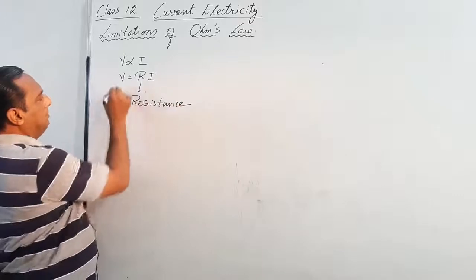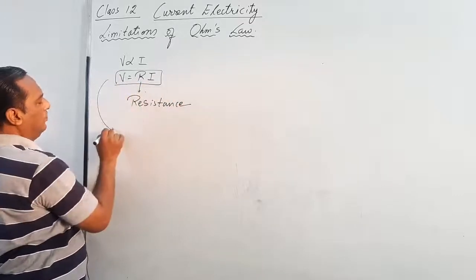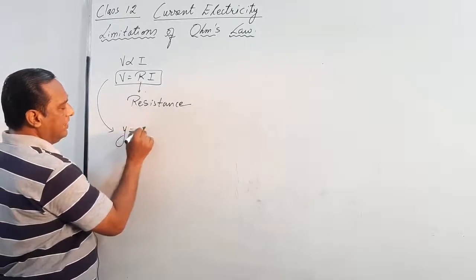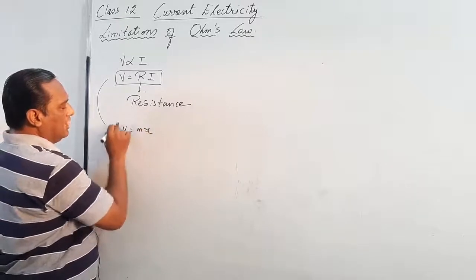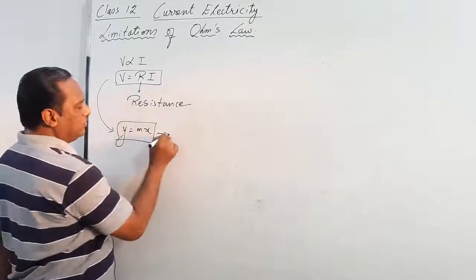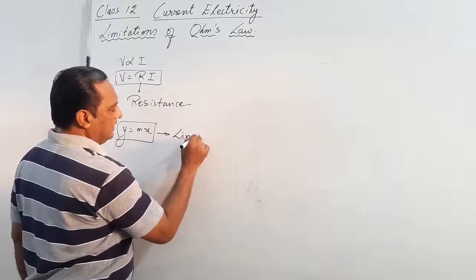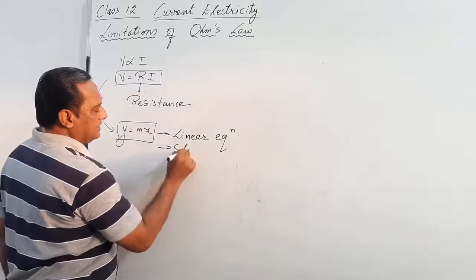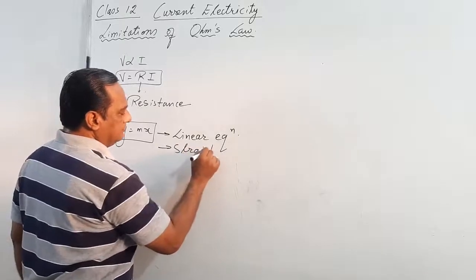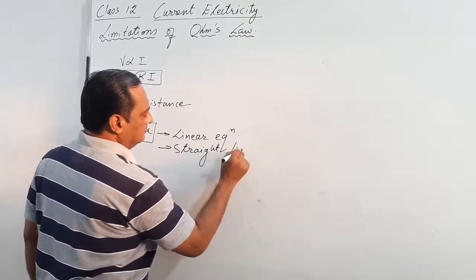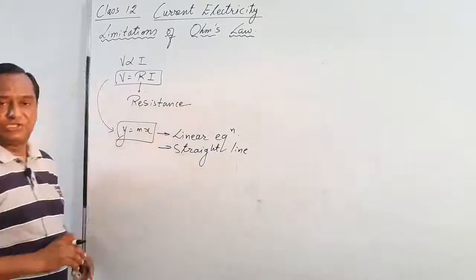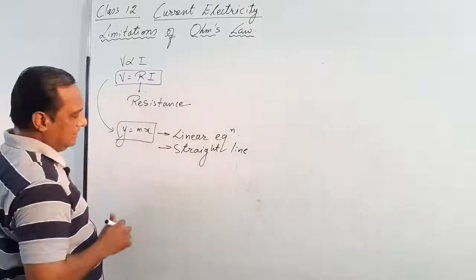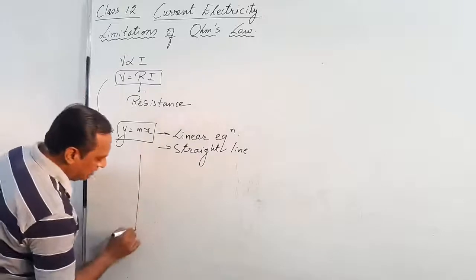Now students, if you compare this equation with our mathematical equation Y is equal to Mx, you know that Y = Mx is a linear equation and it represents a straight line. So if I have a potential difference, V = R × I, it is a straight line.